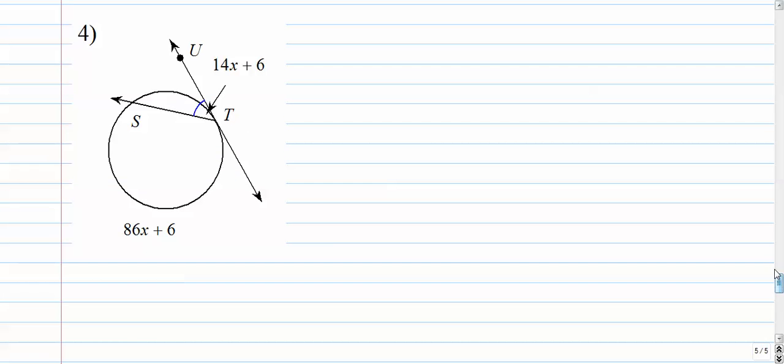Number 4. Alright, so here we need to find the value of x as well. A couple different ways to do this. Maybe I'll show you both ways. Let's focus on the arcs first. What we're doing now is we're looking for this arc measure. That arc measure is going to be the entire circle minus this guy.